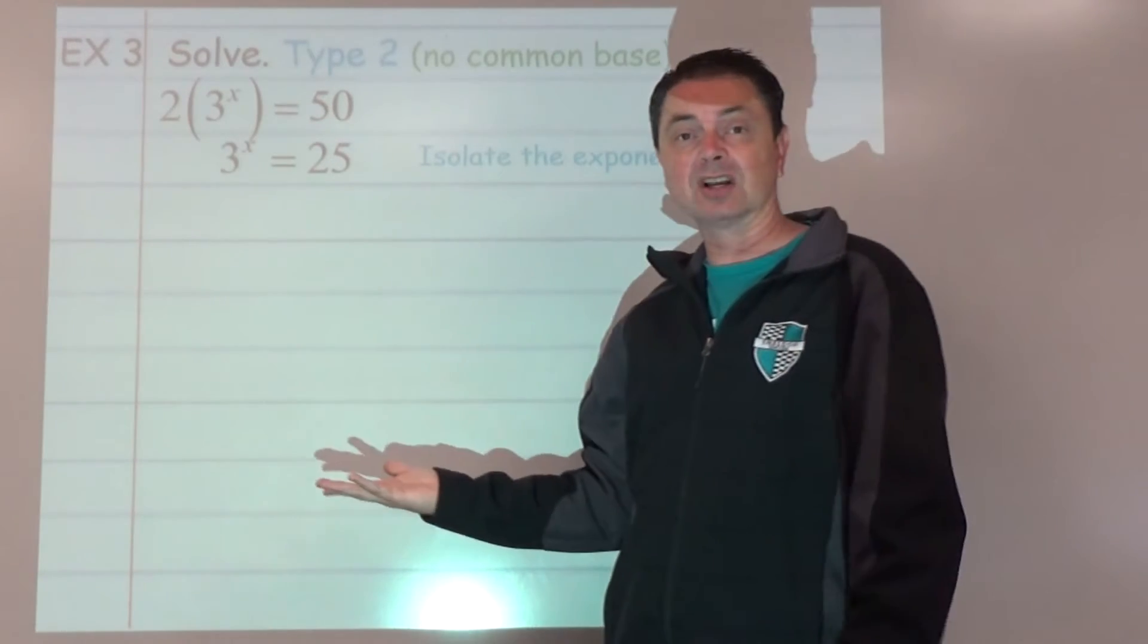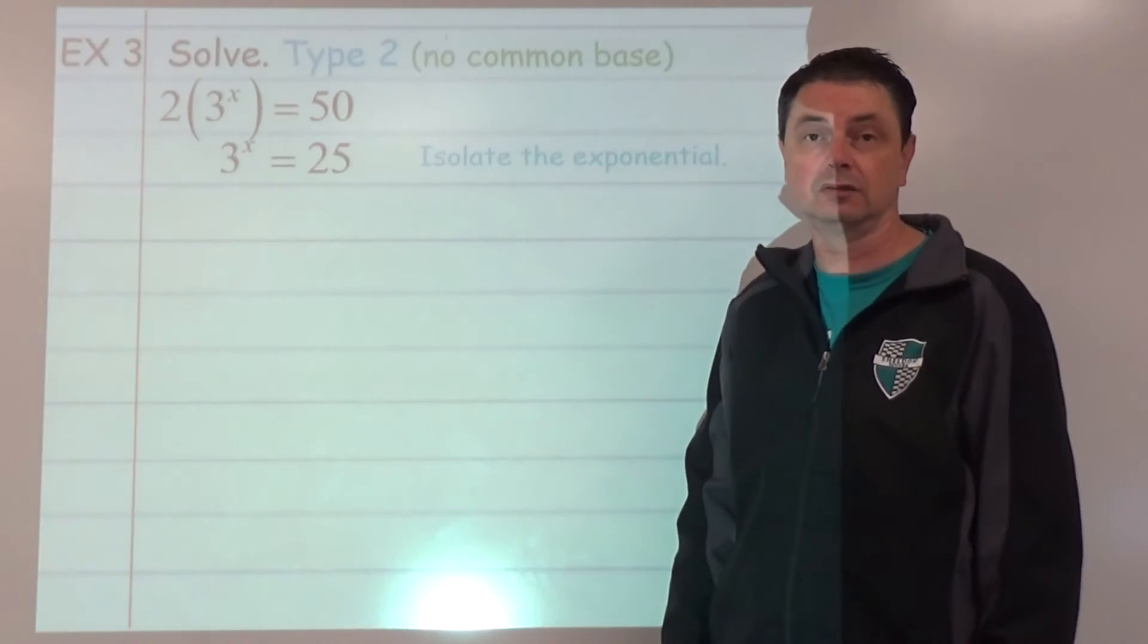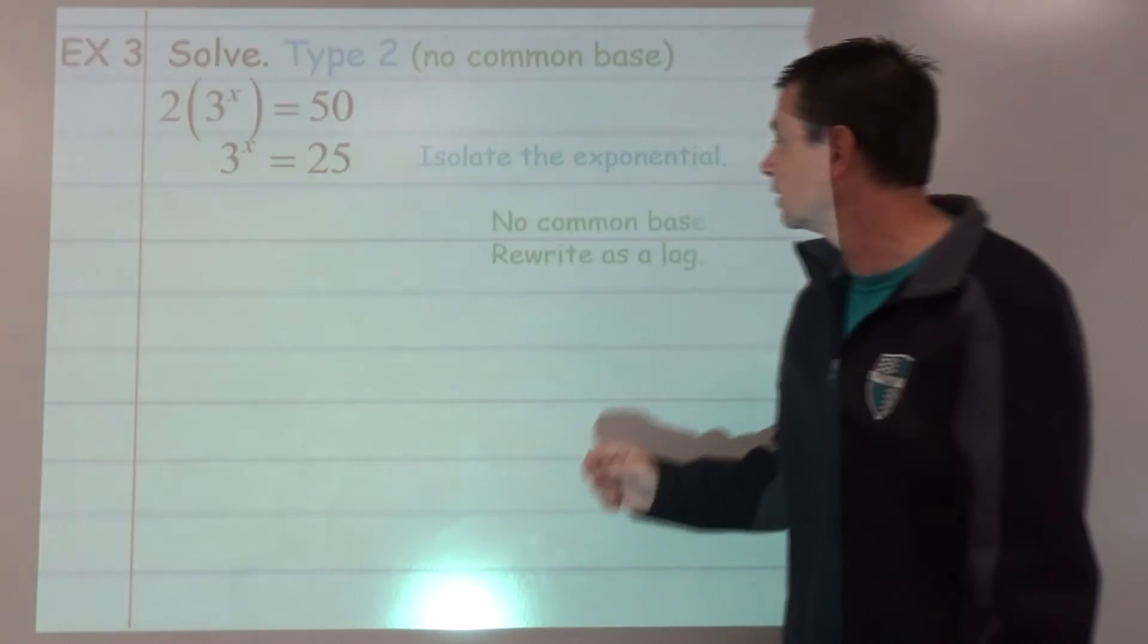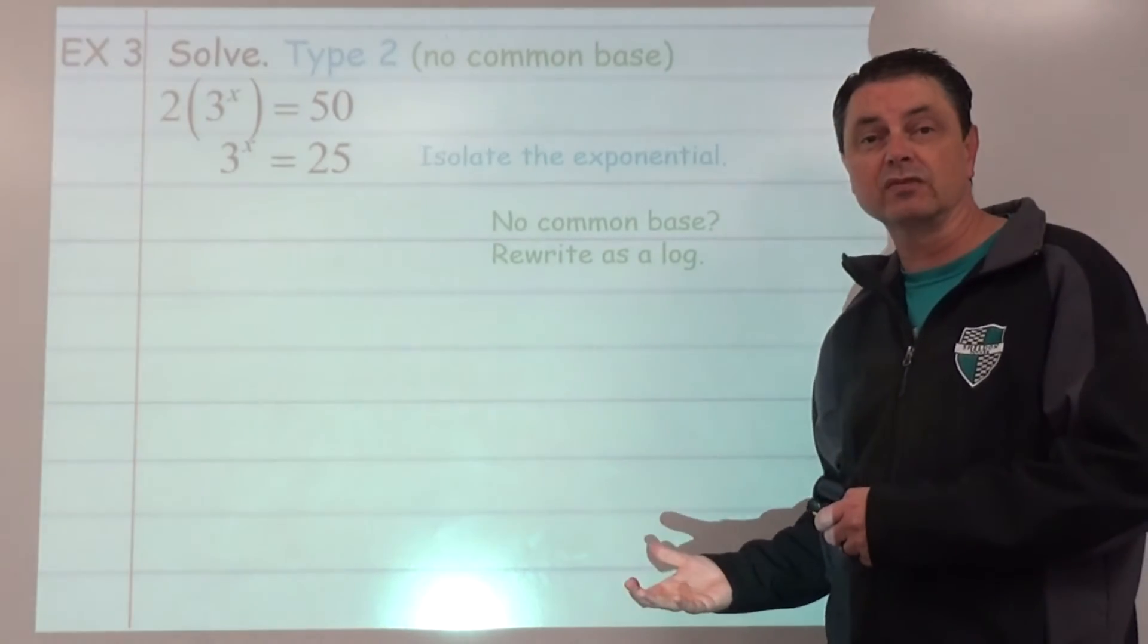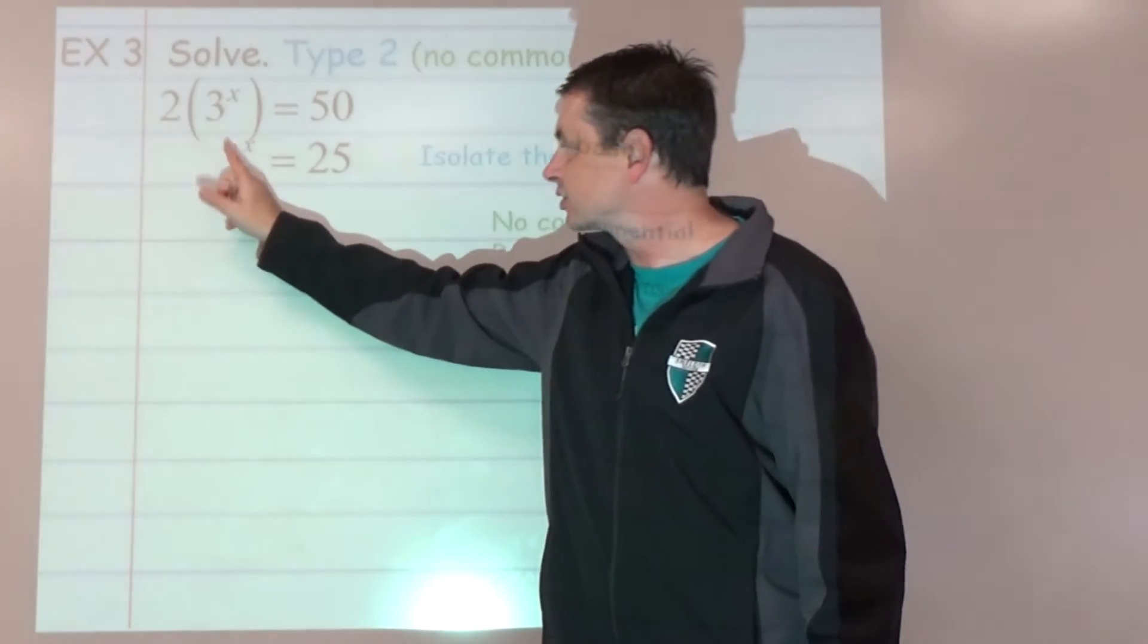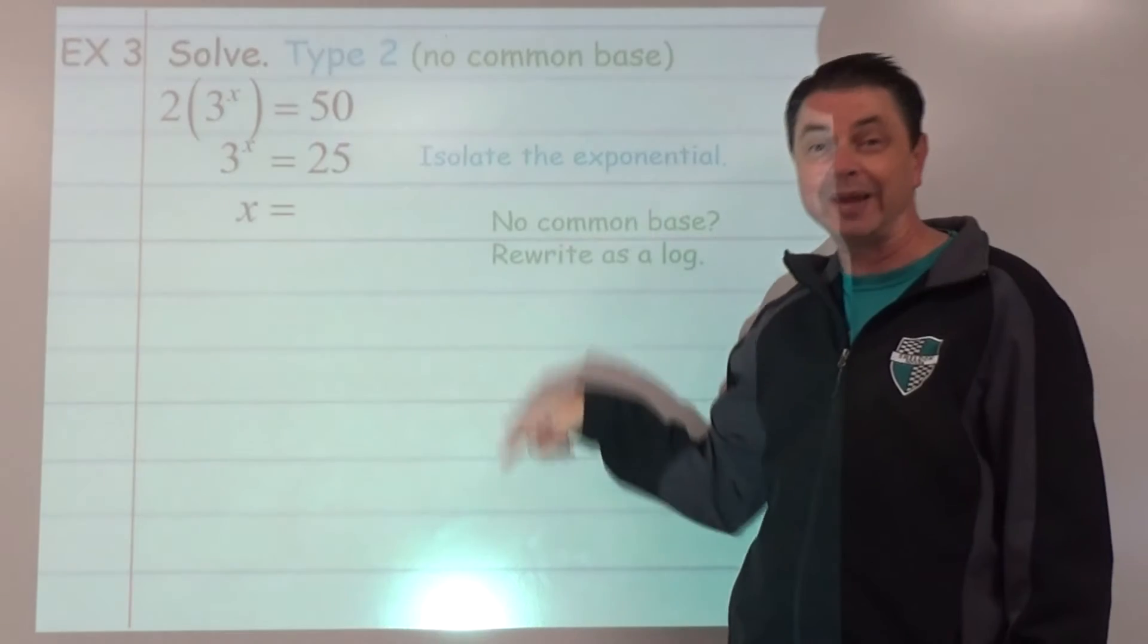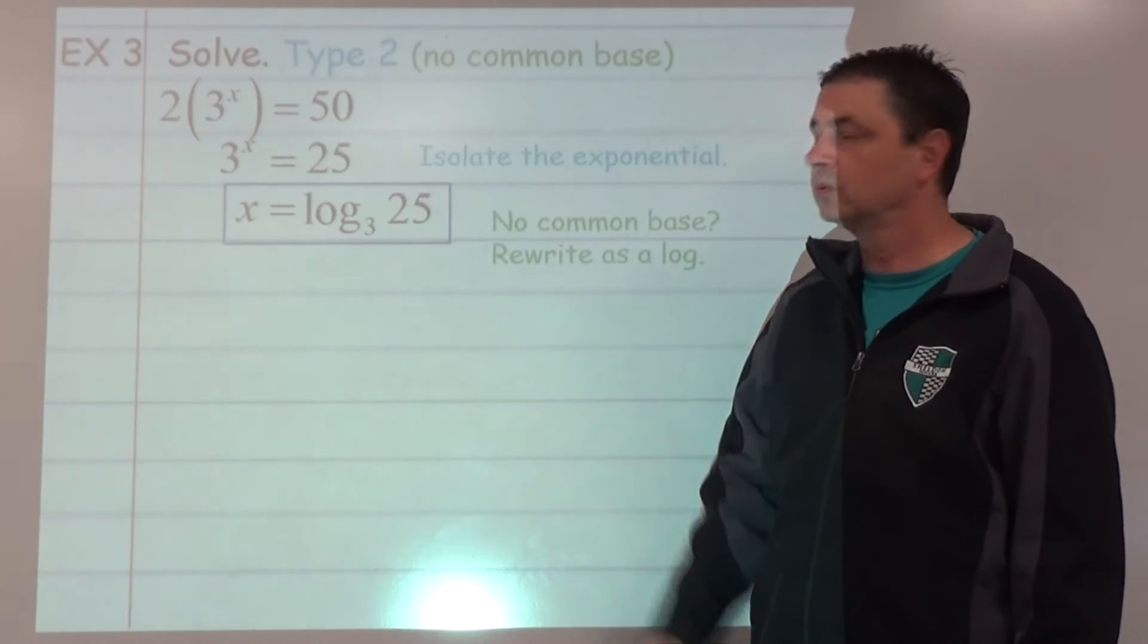And now, do they have a common base? Are 3 and 25 powers of the same number? I don't think so. 5 would be a good guess, but definitely not. So our next step, if there's no common base, is to rewrite from exponential form into log form. That means we move the base. The base is 3. x drops down. So we have log base 3 of 25. That is a number. We're going to box that answer.